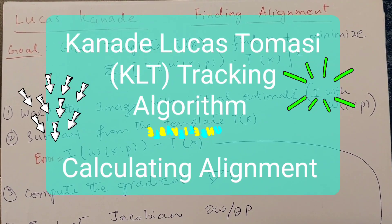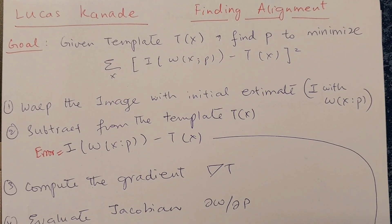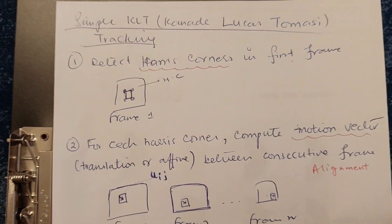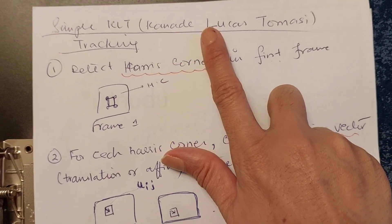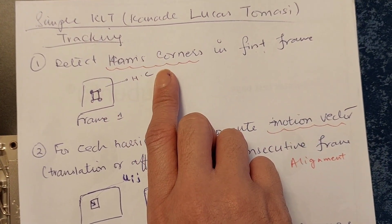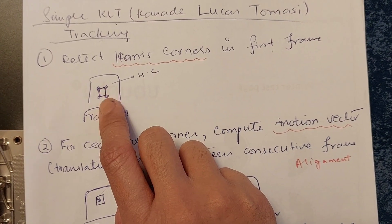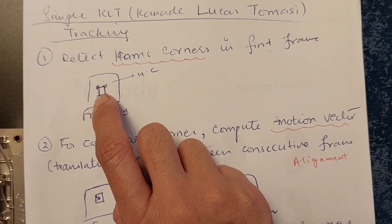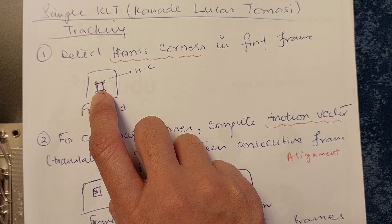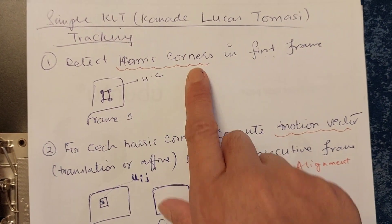Today we are going to study the Lucas-Kanade algorithm in order to track some points. This is also called the Lucas-Kanade-Tomasi (KLT) tracking algorithm. In this algorithm, first of all we have to detect the Harris corners in the first frame. For example, if there is a car, we will find out the Harris corners of that car.